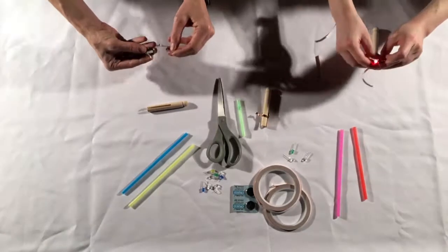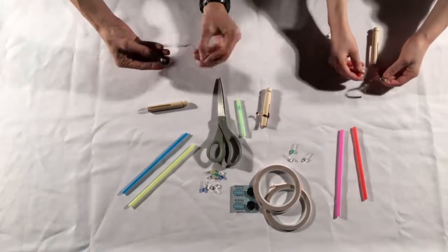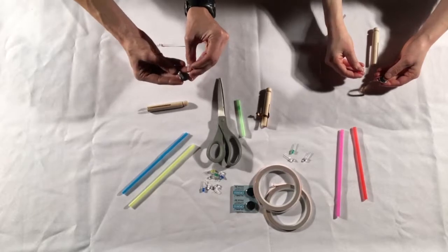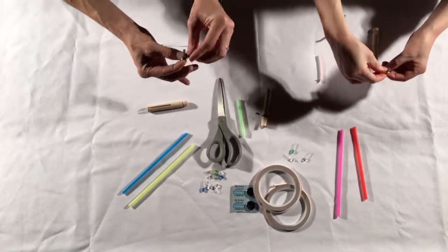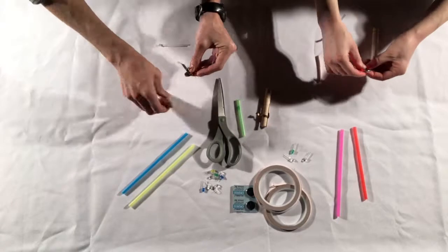Once we've got all that ready, let's take the negative side of the LED and the whole battery itself into the clothespin.